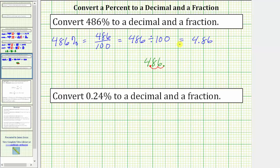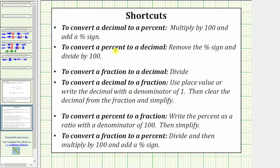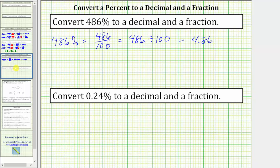Let's compare this process with the shortcut rule for converting a percent to a decimal. To convert a percent to a decimal, remove the percent sign and divide by 100. And notice how that's exactly what we did here to convert the percent to a decimal. We just used the fact that we knew 486% was equal to the fraction 486 hundredths.